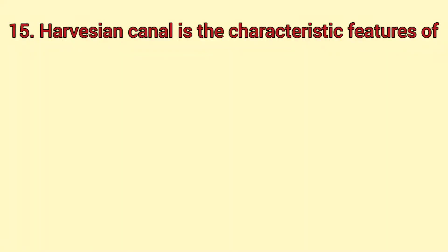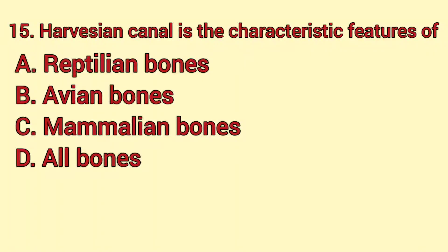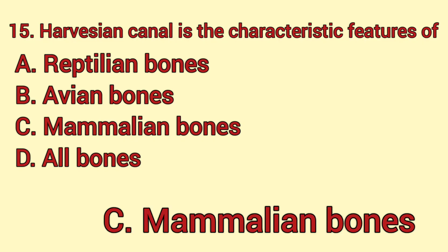Haversian canal is the characteristic feature of reptilian bones, avian bones, mammalian bones, or all bones? The answer is C — mammalian bones.